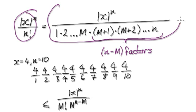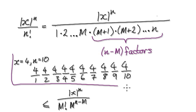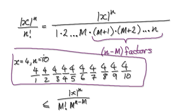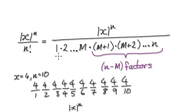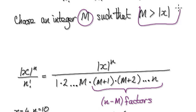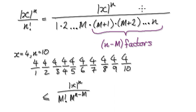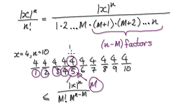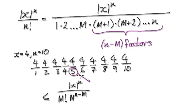Remember this from our previous video — we created a scenario where it's nice and simple so that we could understand what's going on. We created a scenario where x is 4 and n is 10. So when it says select an m, select an m such that m will be bigger than the absolute value of x. So what it means is: 1, 2, 3, 4, 5 — this is our m here. m here is bigger than the absolute value of x, so this integer is bigger than x. This is our m.